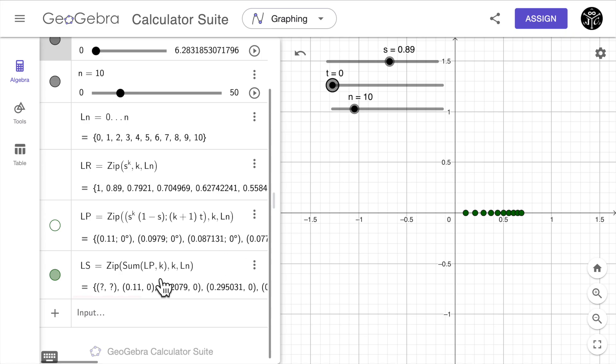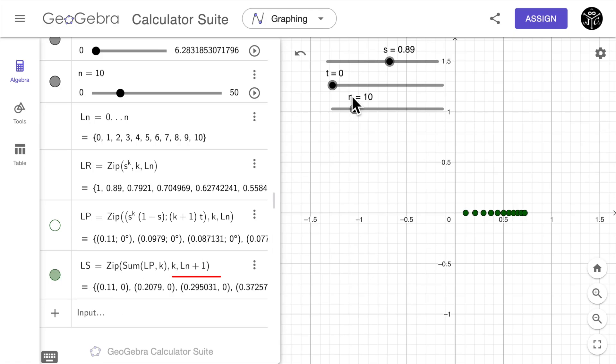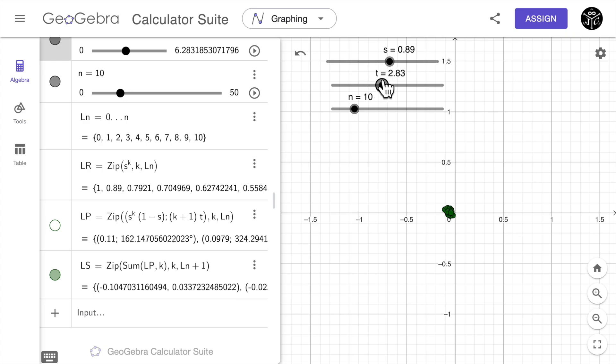Something that you may notice is that the first element of the list ls seems to be undefined. The reason is that the variable k in the zip command should start at one and since we consider k an element of ln which first element is zero we need to adjust that. This is easy to solve since we just need to type ln plus one. Now we have all the elements of the list well defined.